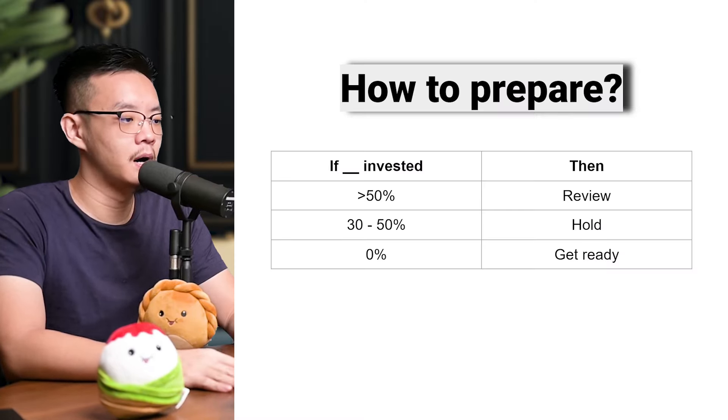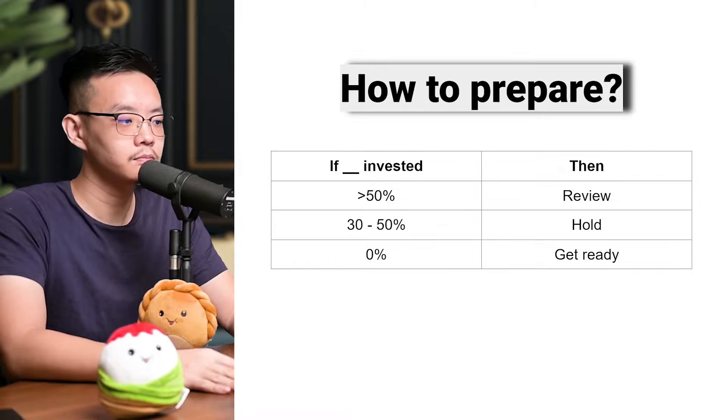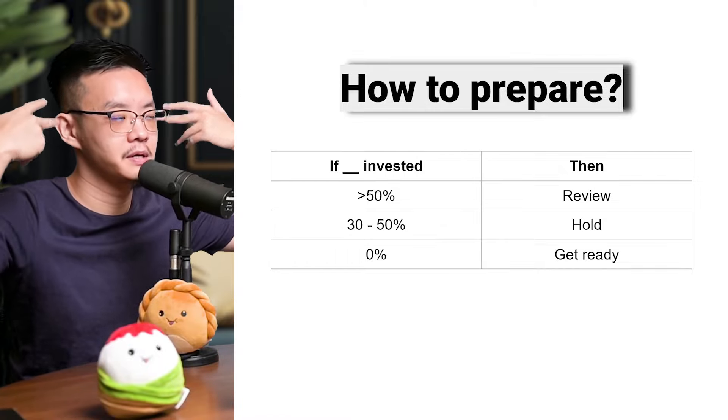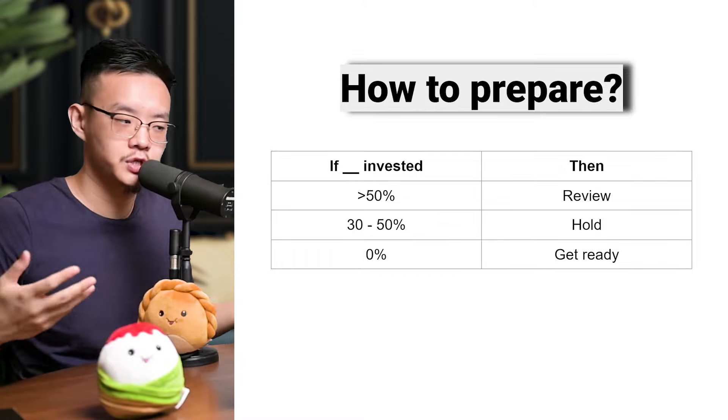It's only useful if you know specifically when — at least within a very tight range, like Q3 or Q4 of 2025. That's the first challenge. The second challenge is that even when it crashes, people are not ready to buy because they don't have a grocery list. They spend all their energy on predicting when the crash is coming rather than identifying a short list of stocks to buy when it does.